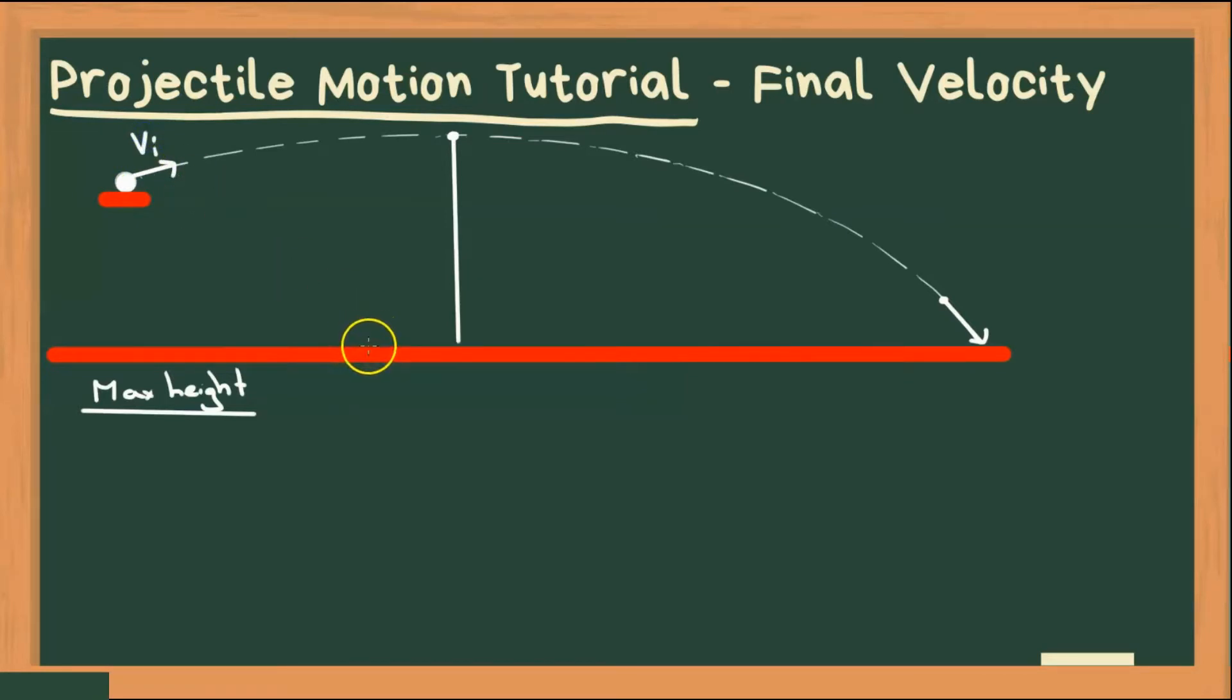and final velocity. Final velocity, you can really pick any other point along the path and use that as your final velocity. Now depending though which point you choose will also depend on what the other variables mean. For example, if I choose this point to be our final velocity, then when I solve for displacement in y, I will get a positive value up to this point. That would be our displacement in y. But if I choose down here to be my final, then my displacement in y would be from that initial position to that final position.